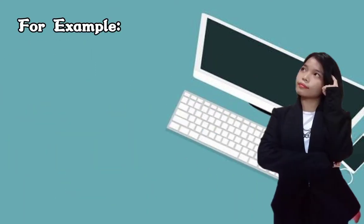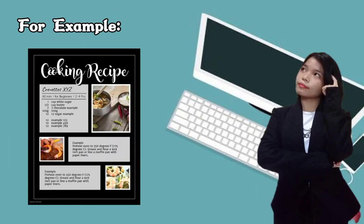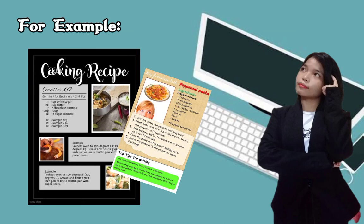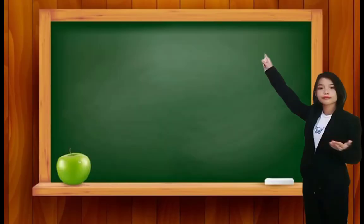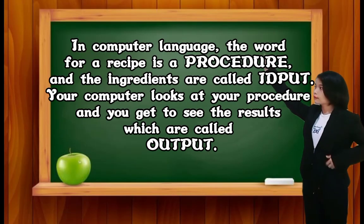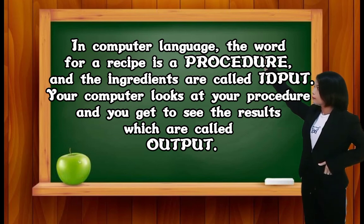For example, we've all seen food recipes. They list the ingredients needed and a set of steps for how to make the described meal. In computer language, the word for a recipe is a procedure and the ingredients are called inputs. Your computer looks at your procedure and you get to see the results, which are called outputs.